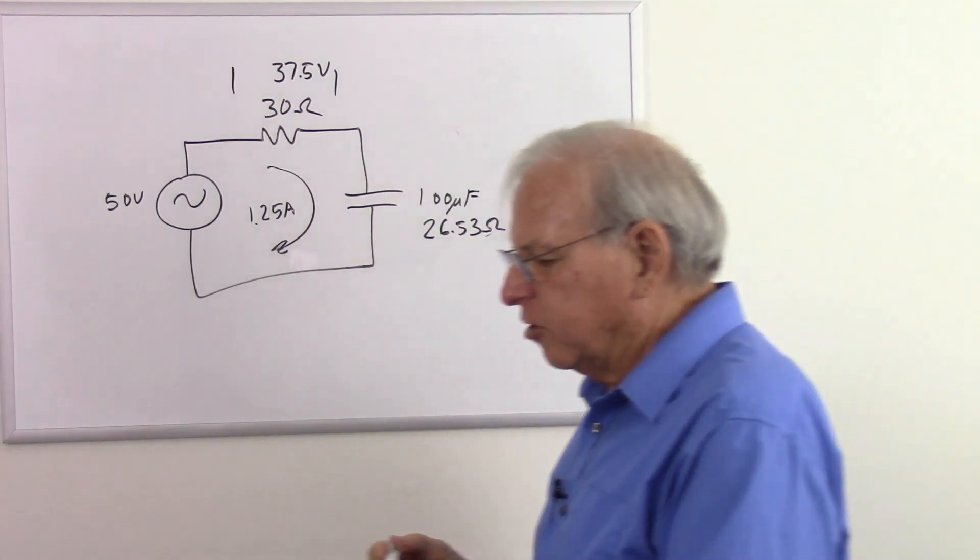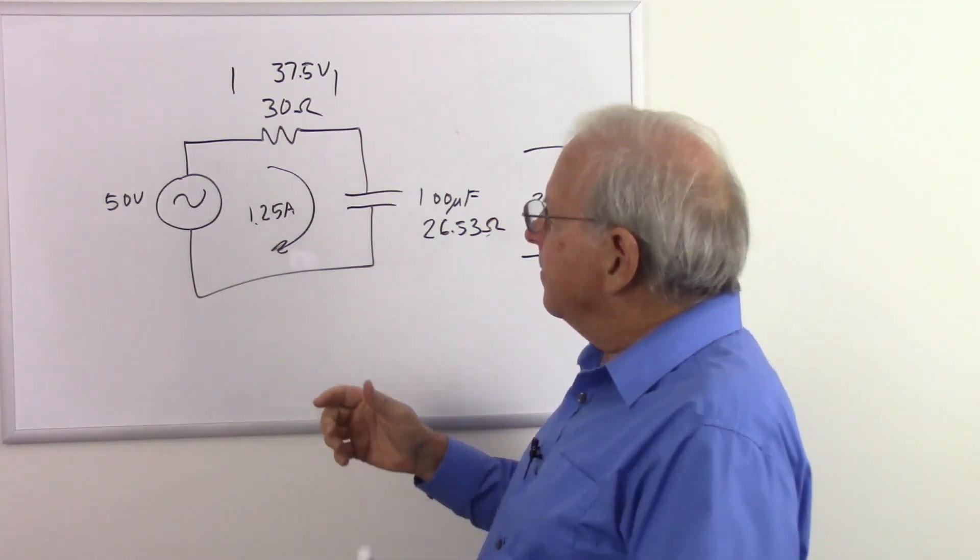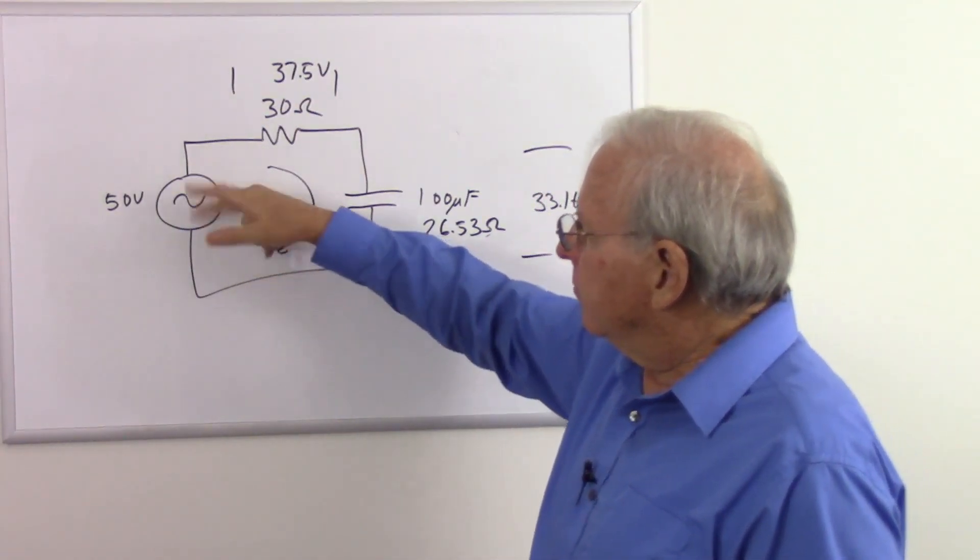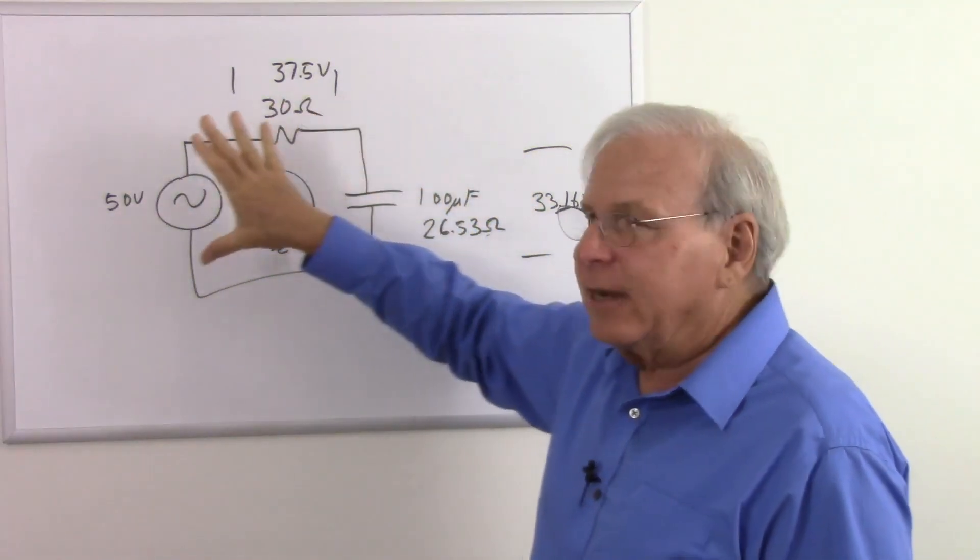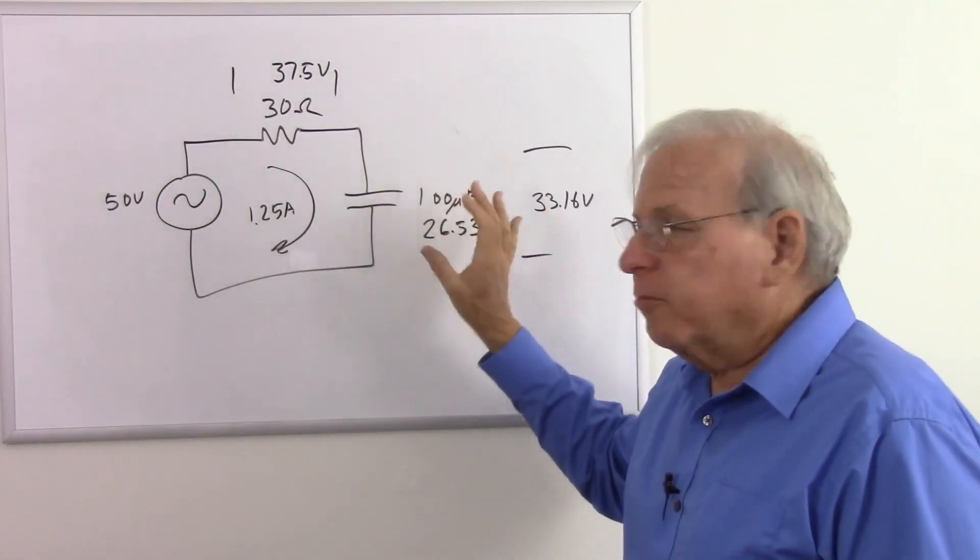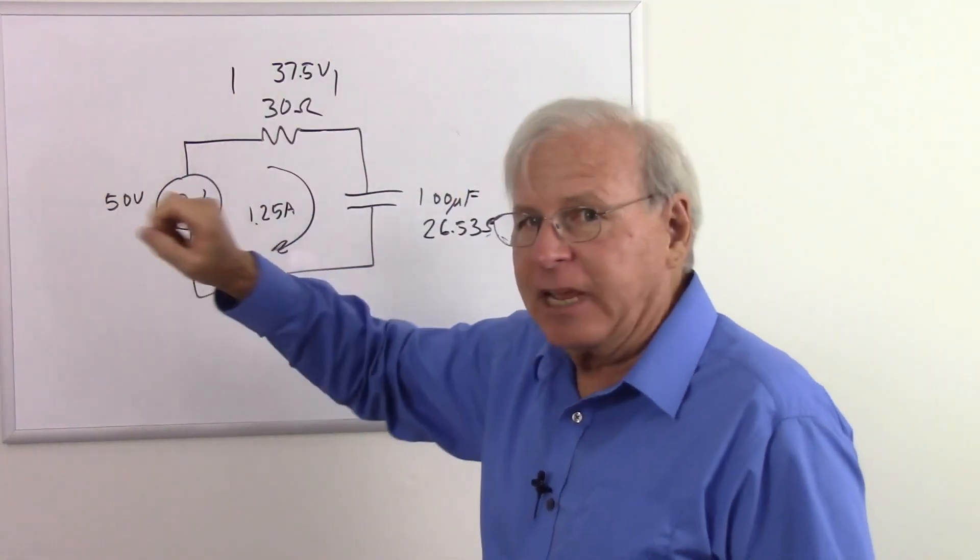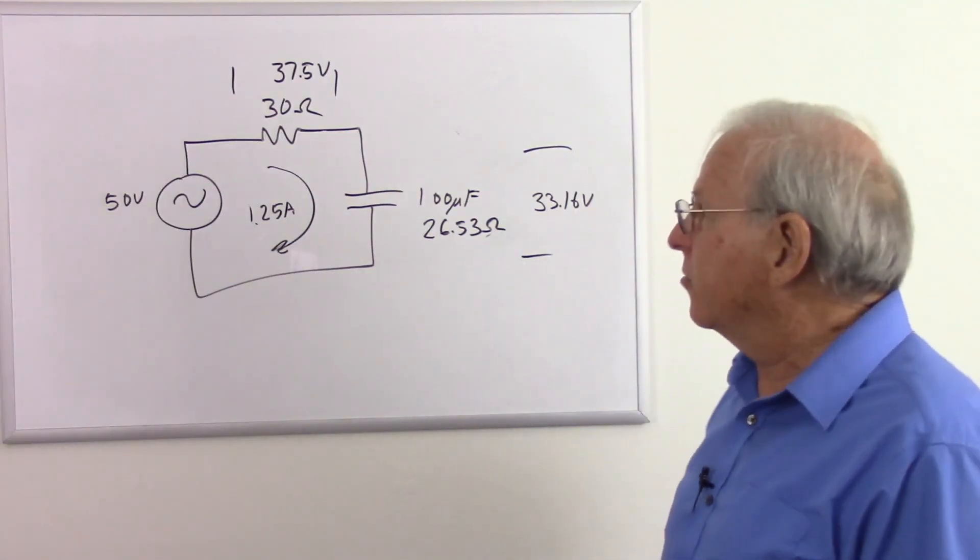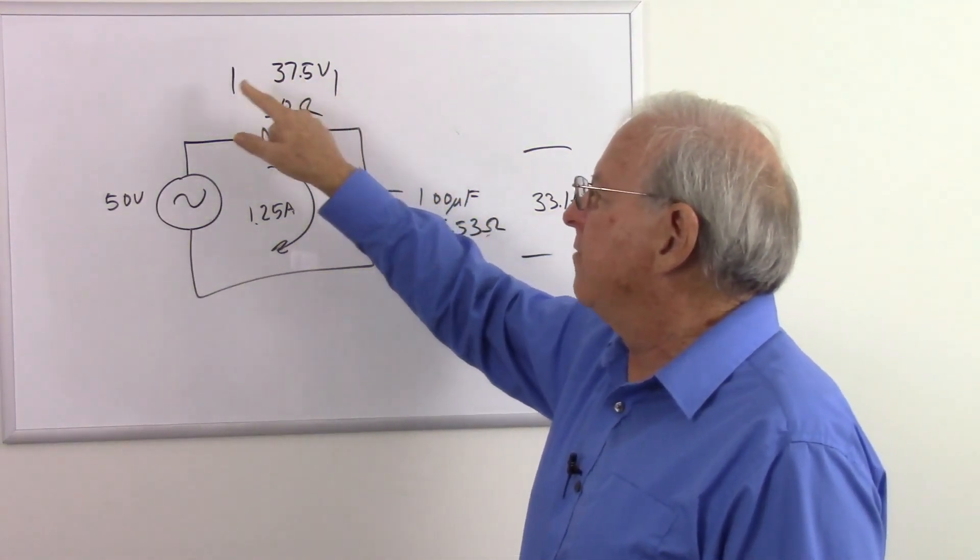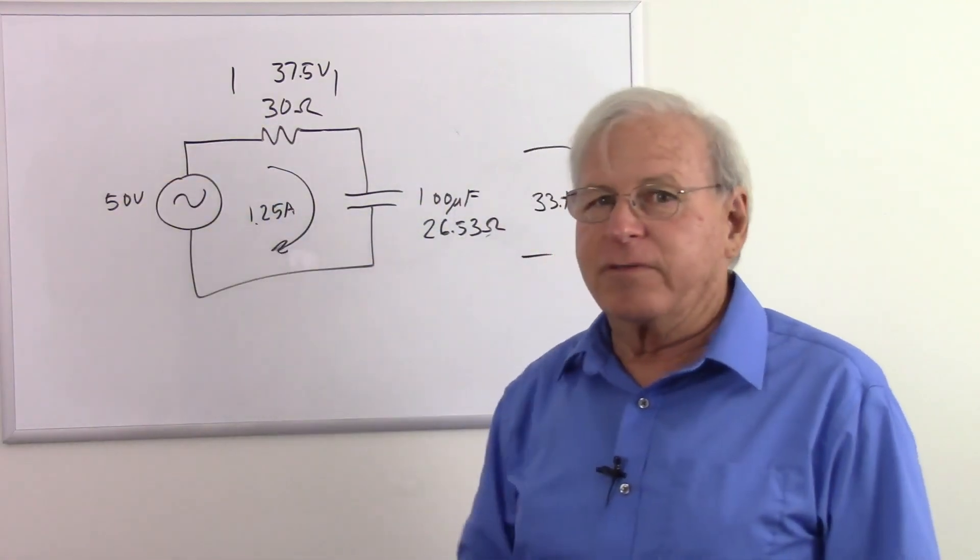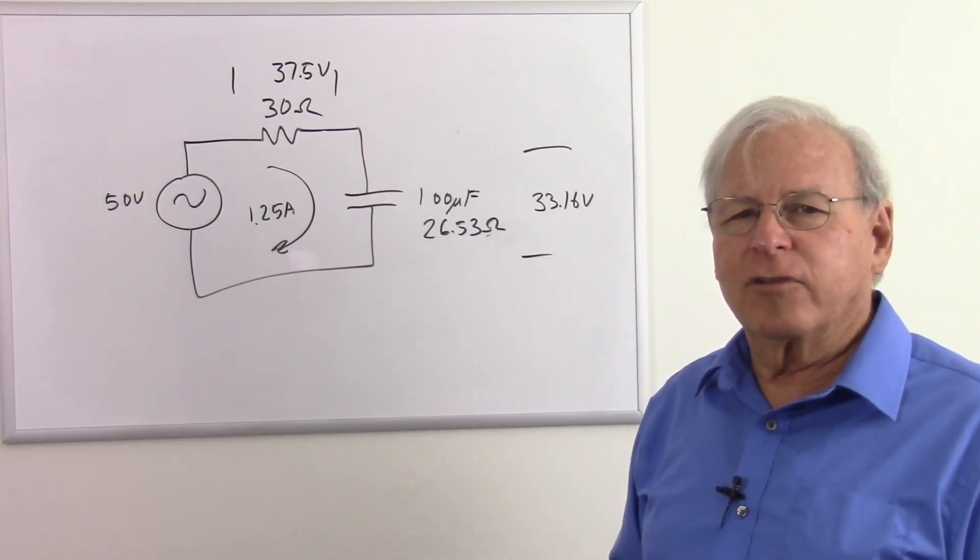So Kirchhoff's voltage law says that all of my voltages must add up to zero. That's going to be a problem because the voltage keeps flipping. Well, we know that we can also say it a different way. My consumer voltages must add up to my source voltage. So these two voltages should add up to 50 if Kirchhoff's voltage law still works. So are we ready? 33.16 plus 37.5 does not equal 50 volts. So it appears that Kirchhoff's voltage law does not work in an AC circuit.